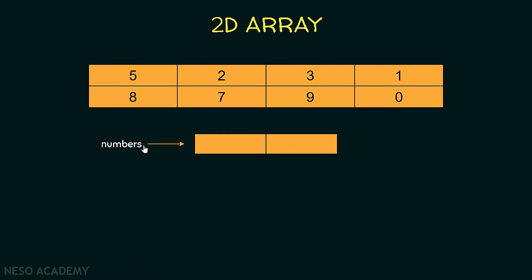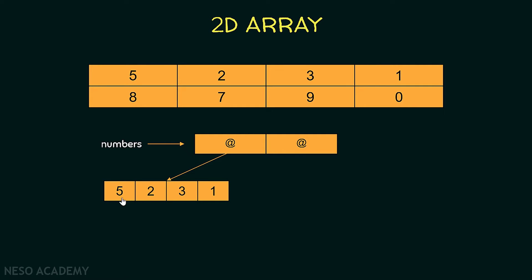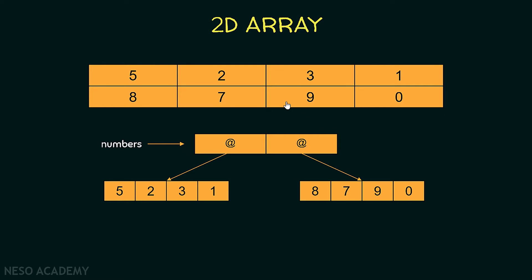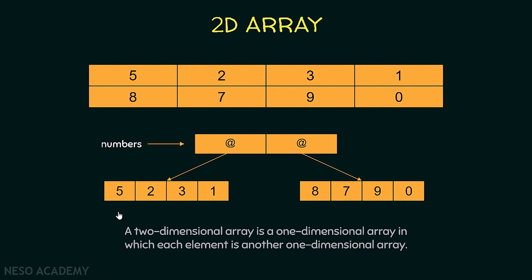We have a variable that references an array of two elements. These elements contain some addresses. The first element contains the address of this array over here — 5, 2, 3, 1 — and as you can see this is the first row of the table. The second element contains the address of this array over here, and as you can see this is the second row of the table. So to represent this table inside Java we will have a 2D array that looks like this. It is an array of two elements and each element is an array, and to imagine this array it looks like this table over here.